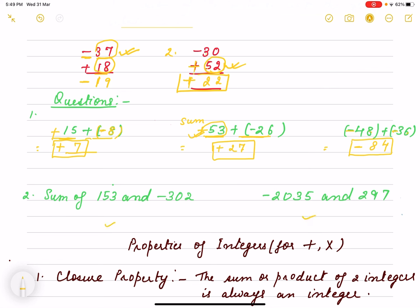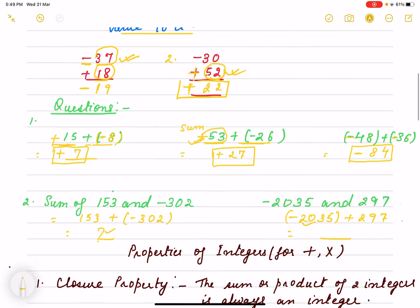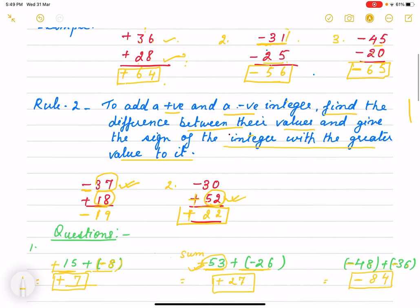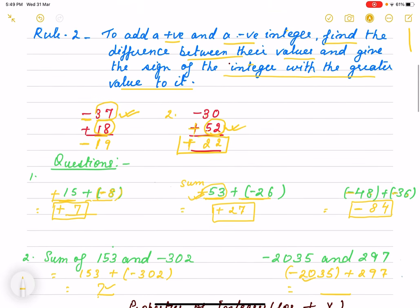We find out how to do it. What do we write? 153 plus -302, find the answer. Same way here, -2035 and +297. This is for you to solve. This way we just go to the rules of integers, the procedures.